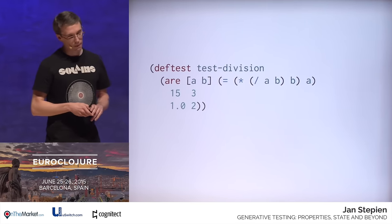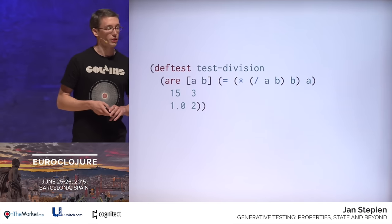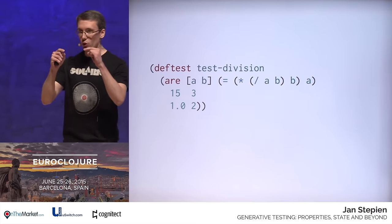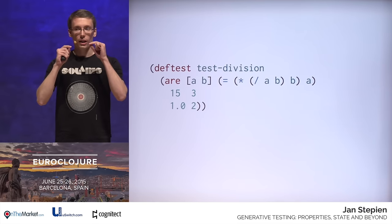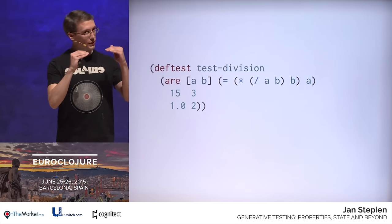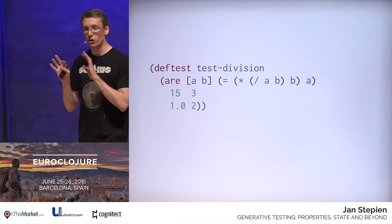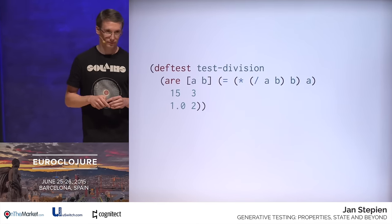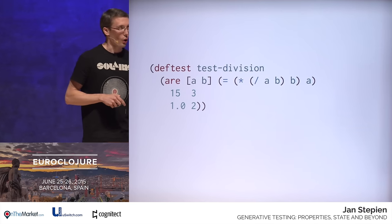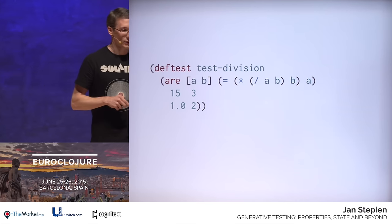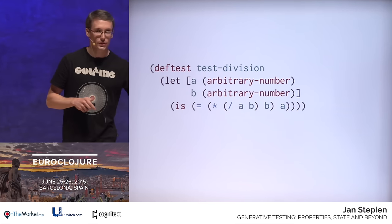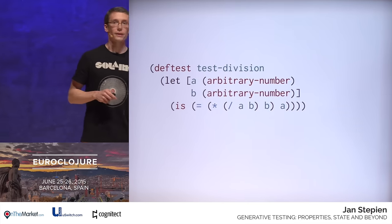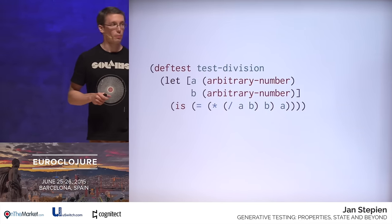Let's take this property and put it into our test. Notice that this time our test cases do not have to have results specified. We just specify input values, and we don't care about the output value. We just care that this property holds for every single input value. Wouldn't it make sense to have those values generated for us for free, so that for arbitrary A's and arbitrary B's the property holds?